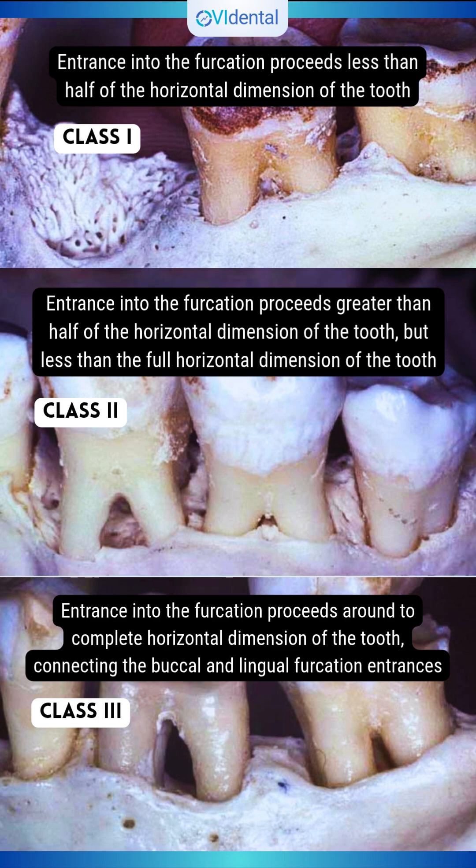Class 3: Entrance into the furcation proceeds around to the complete horizontal dimension of the tooth, connecting the buccal and lingual furcation entrances. Figure 3.